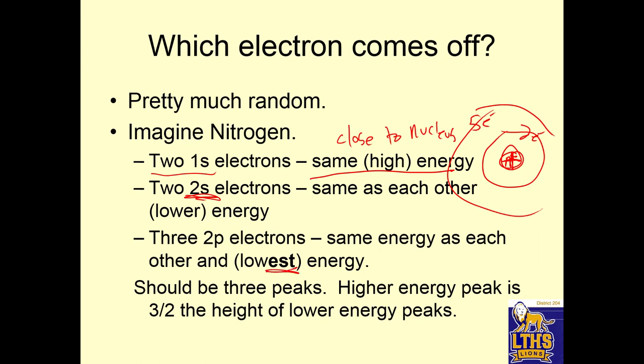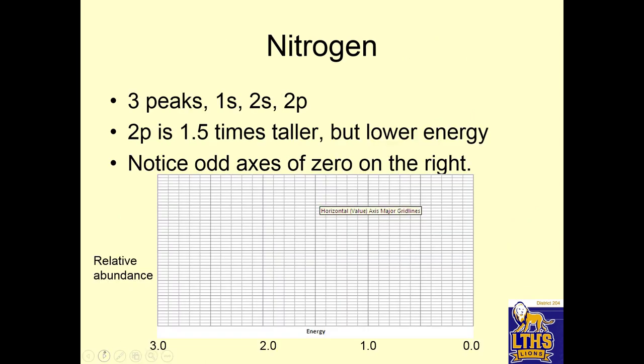The two 2s electrons have the same energy as each other and lower energy than 1s. And the three 2p electrons have the same energy as each other, and they'll have the lowest energy. So there'll be three peaks. This is where we get evidence that there's different clouds of electrons. The higher energy peak is three halves the height of the lower energy peak because there are three of them.